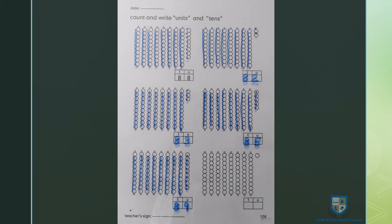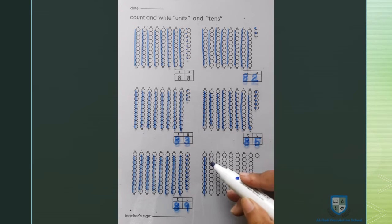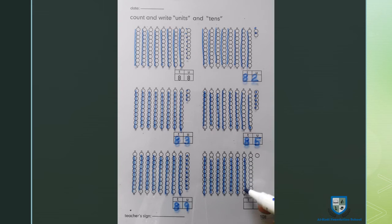अब last beads को हम count करेंगे। 10, 20, 30, 40, 50, 60, 70, 80, and 1. 8 tens, 1 unit. 81.